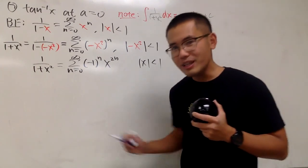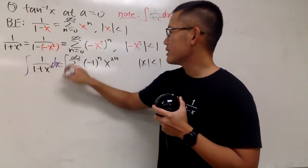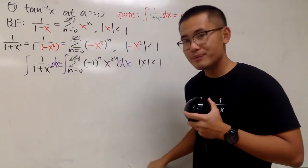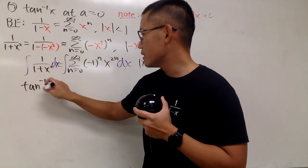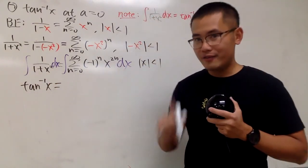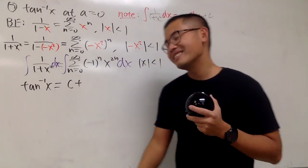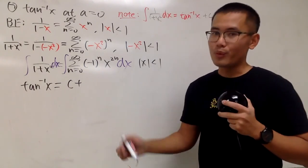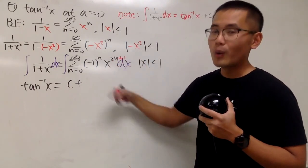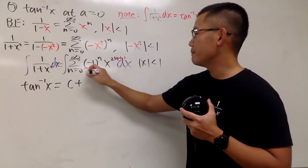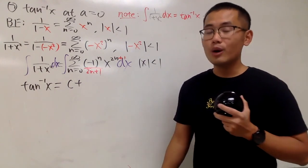Now it's time for us to integrate. We will integrate both sides. The left-hand side gives us inverse tangent. On the right-hand side, we go ahead and add 1 to the power — this is the new power — and divide by that. We can integrate power series all day, all night long.